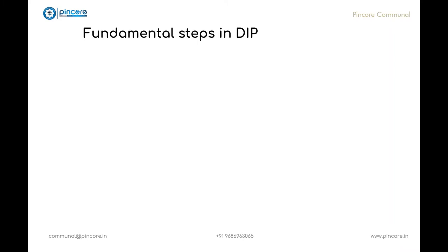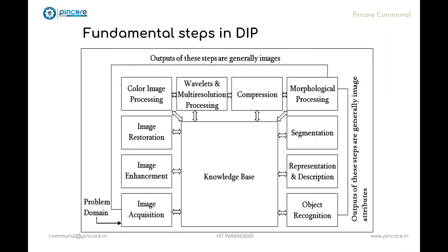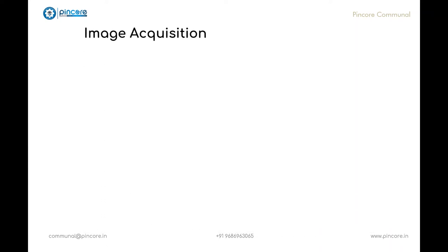Next we will see the block diagram which shows the fundamental steps involved in digital image processing. Here knowledge about a problem domain is coded into an image processing system in the form of knowledge base. The first step is image acquisition, image enhancement, image restoration, color image processing, wavelets and multi-resolution processing, compression, followed by morphological processing. Till these steps the output of these methods will be images, but after this, that is segmentation, representation and description, and finally object recognition, the output of these steps are generally the attributes extracted from the images. Now let us know about all these steps in detail.